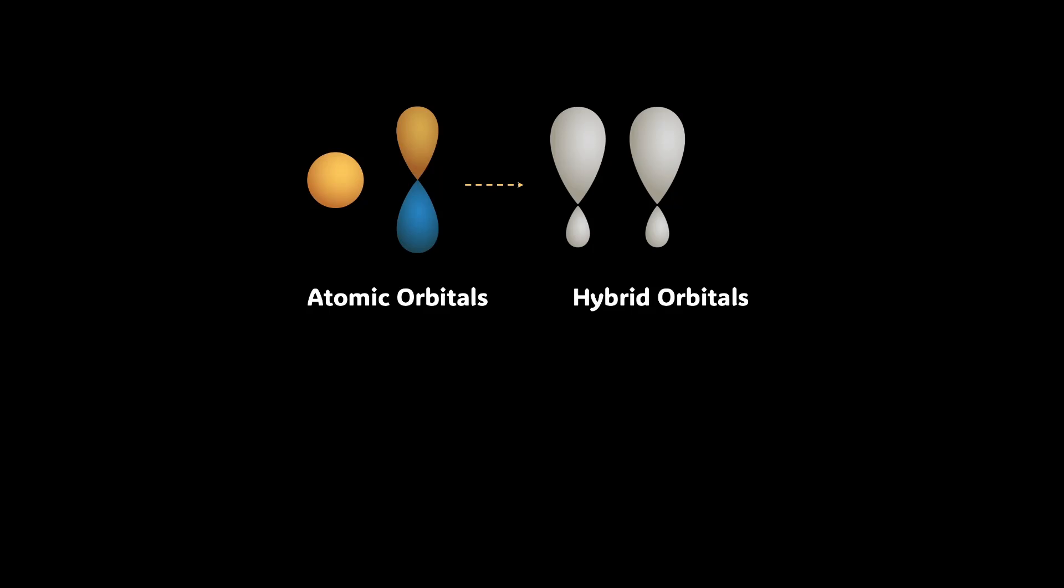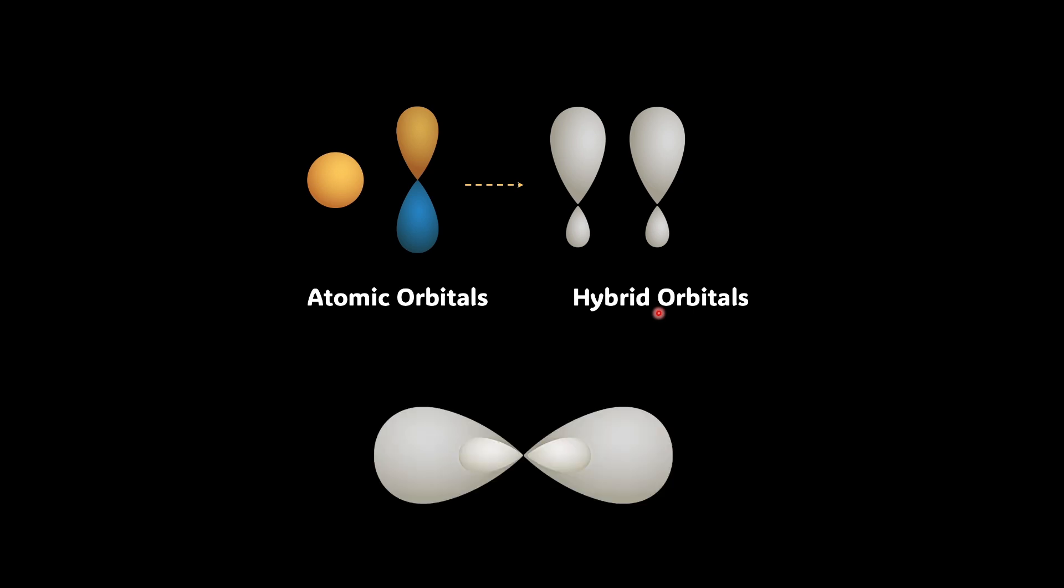Hi there! In the previous video, we saw how atomic orbitals combine to form new sets of equivalent orbitals known as hybrid orbitals. Unlike pure orbitals, the hybrid orbitals are used in bond formation. And we also explored how hybridization does a much better job of explaining the geometry of different molecules, unlike VBT.